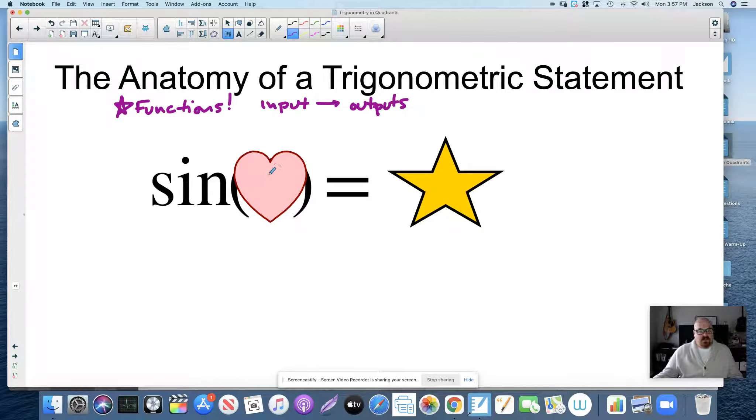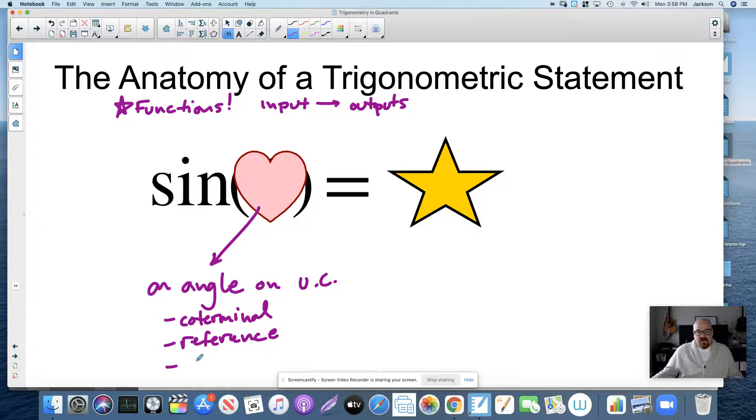But I want to make sure everybody understands that the input, it doesn't matter, I wrote sine, this could be cosine, it could be tangent, it could be anything. What I want everyone to understand is what goes in here. Now this has to be an angle. We only take trigonometric values of angles. Now this angle, it could be on the unit circle. It could be an angle on the unit circle. Keep in mind that there are coterminal angles. Keep in mind that there are reference angles. Keep in mind that there are negative angles. So any, all of these apply to the angle that could be in here. That's if we're looking at the unit circle.